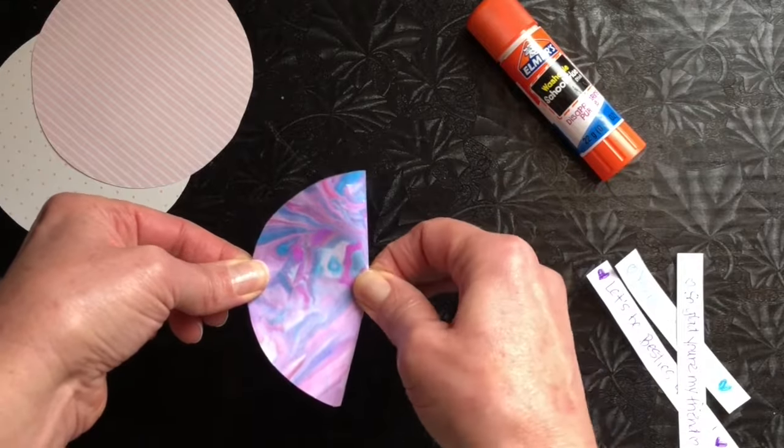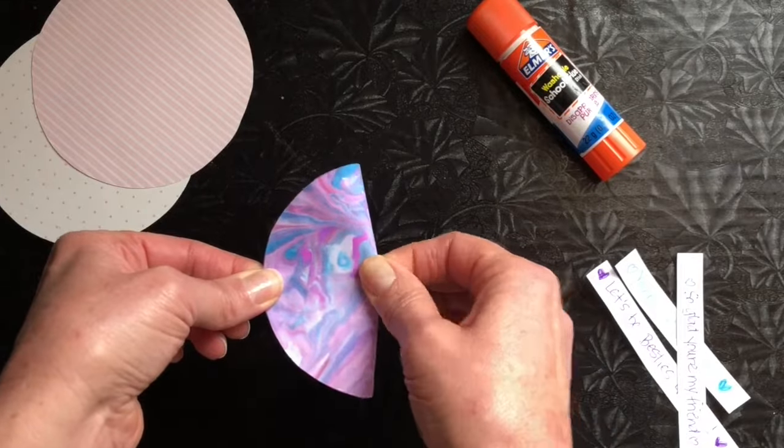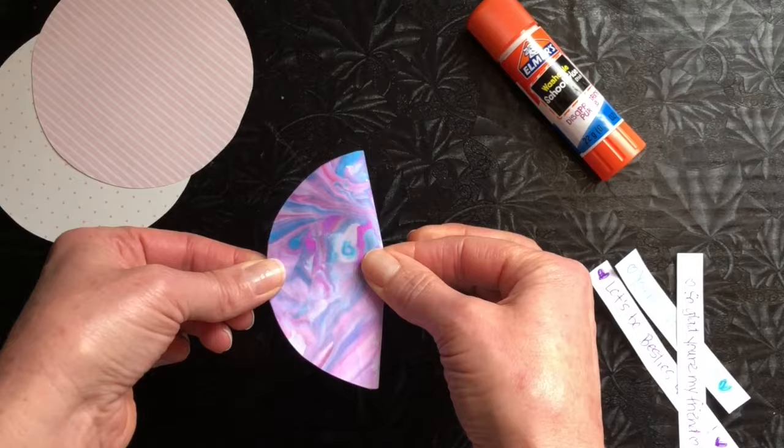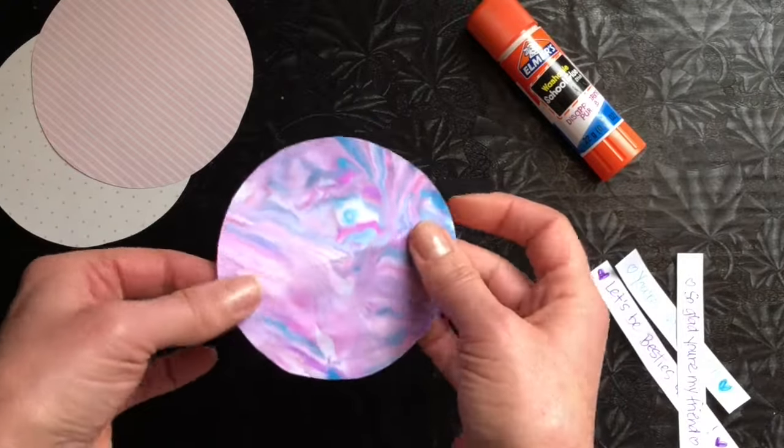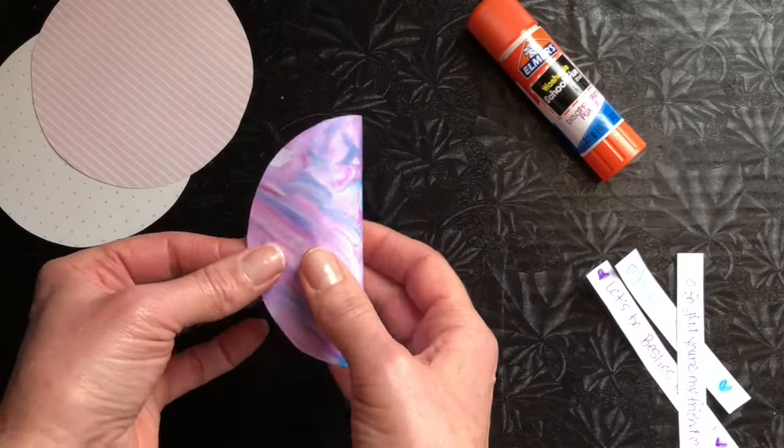You don't have to do this but it does make the shaping of the fortune cookie a little bit easier. So then when you open it back up, we're going to fold it in the opposite direction.